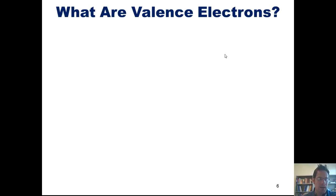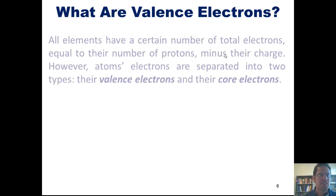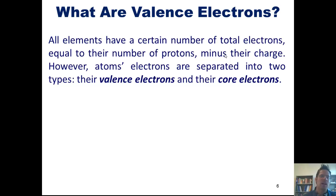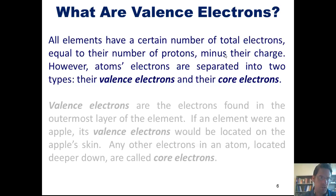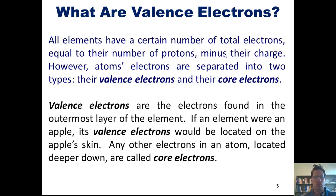I now wish to teach you about valence electrons. And what are valence electrons? Well, all elements, just so you know, have a certain number of total electrons, which is equal to their number of protons minus their charge. However, atoms' electrons are separated into two different types, their valence electrons and their core electrons. Valence electrons are the electrons found in the outermost layer of the element. If an element were an apple, then its valence electrons would be located on the apple's skin. Any other electrons in an atom, which are located deeper down, are called core electrons.